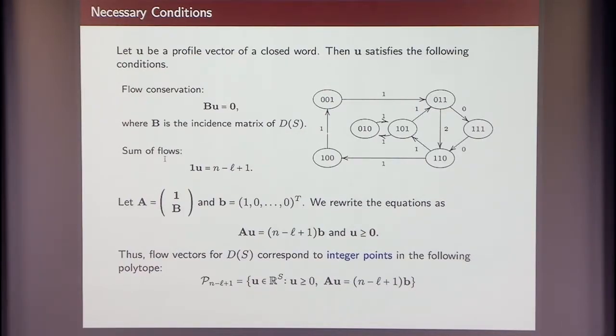And how do we construct the polytope? We know that we have to have a flow conservation equation for all the profile vectors because we know if you're looking at closed vectors, closed words, the sum of the incoming flows has to be equal to the sum of the outgoing flows. So if U is a profile vector of a closed word, then it has to satisfy the flow conservation equation where B is an incidence matrix of the graph. And on top of it, we have a sum of flows conservation because we would know in advance how many substrings we expect to see.